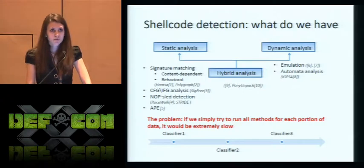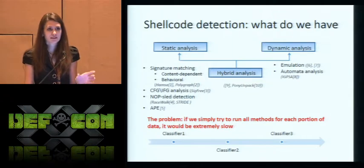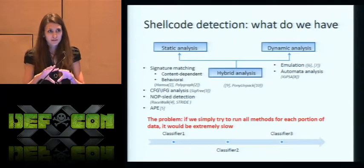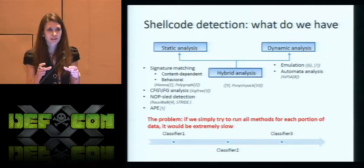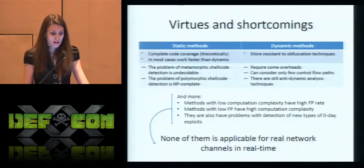If we look at those methods, we can notice that none of them can detect every type of shellcode. So if we want to detect everything, we can simply try to execute one algorithm after another — but it would be extremely slow.